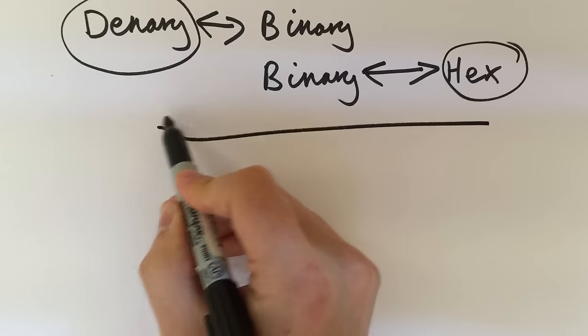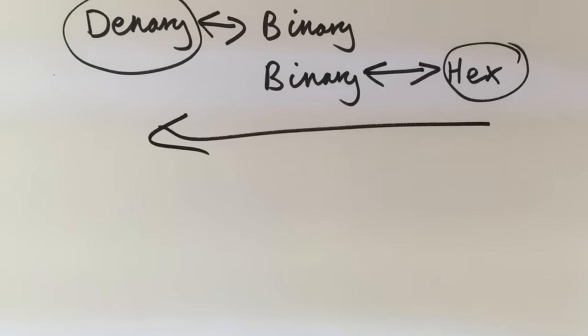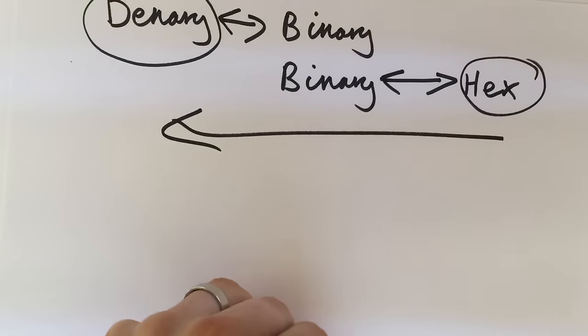We can convert hex straight across to denary by converting through binary. So let's see if we can have a go at taking a denary number and converting it to hexadecimal.